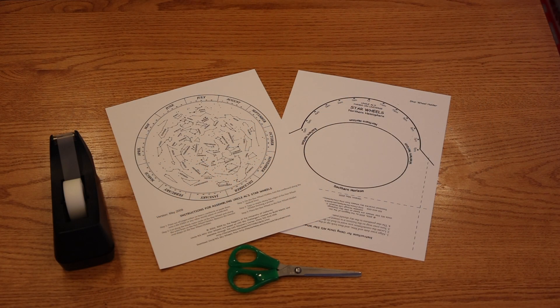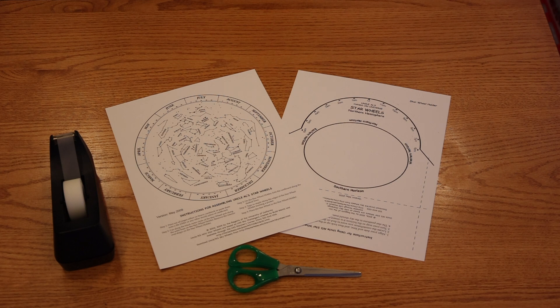To start, click the link in the description of this video and there you can print out the two sheets of paper that you need to make your planisphere. It works better if you print it on heavy paper or something like card stock that's pretty thick. Otherwise, the only things you need are a pair of scissors and some tape.